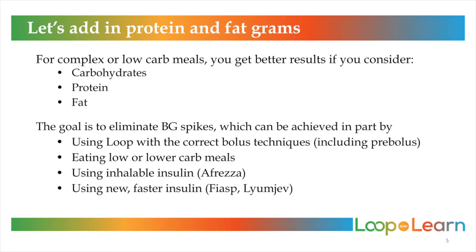Now let's take a look at more complex meals or even low carb meals. You will get better, more consistent results if you take into consideration the number of grams of carbohydrates, proteins, and fat that is in your meal. Our goal is to eliminate blood glucose spikes when eating. This can be achieved by using Loop with the correct bolus techniques, by diet modifications like choosing to eat low carb meals, or by using inhalable insulin like Afreza or faster acting insulins like Fiasp or Lumjev. These are all great things to have in your diabetes tool bag.